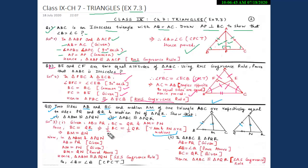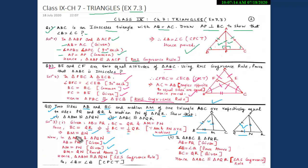Since BC equals QR and AM and PN are both medians, by taking half of both sides we get BM equals half of BC and QN equals half of QR. Therefore BM equals QN. Now in triangle ABM and triangle PQN: side AB equals PQ (given), median AM equals PN (given), and side BM equals QN (proved above). So triangle ABM is congruent to triangle PQN by the Side-Side-Side congruency criteria.